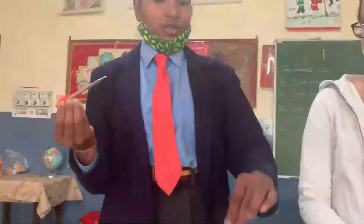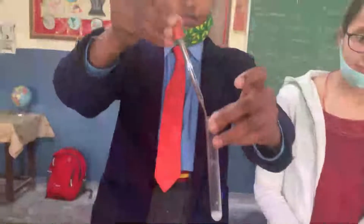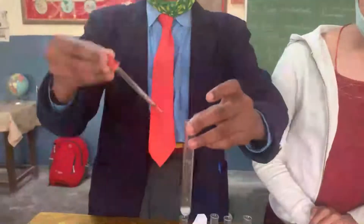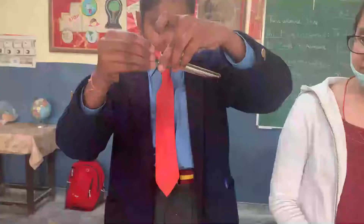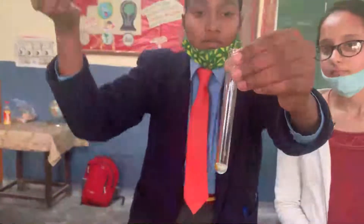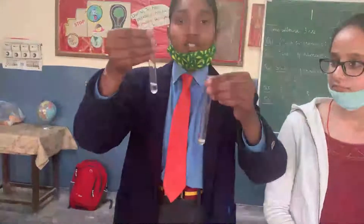We are having iodine and starch solution — 1% starch solution and 99% water. Then we took the dropper and added iodine — just one drop of iodine — and then took the starch solution.